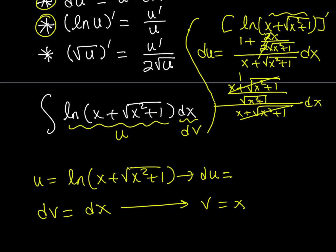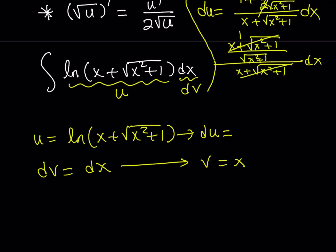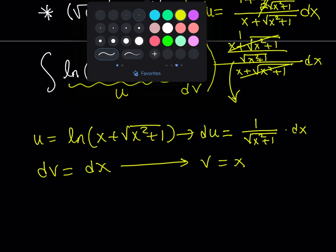Let's go ahead and write that in. So du is going to be 1 over the square root of x squared plus 1, times dx. Now I pretty much have everything I need, so let's go ahead and put this together.